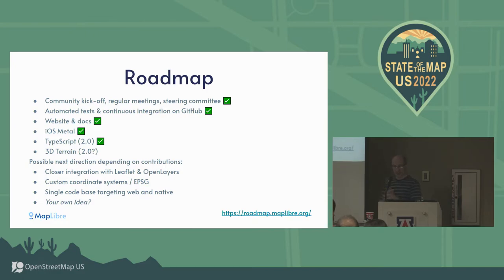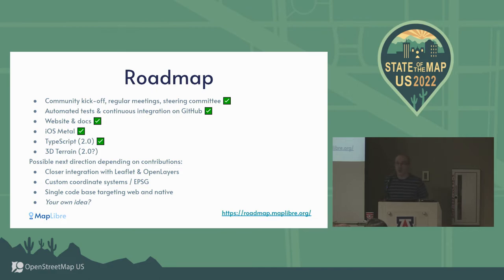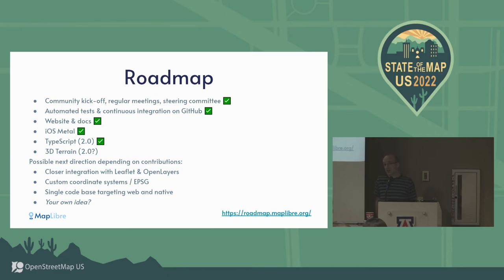Looking at our aspirations and approximate roadmap - some of these items have already been checked off. 3D map is next on the agenda. We want closer integration with Leaflet and OpenLayers. Possible targets include custom coordinate systems - Web Mercator is fun but does distort things. A single codebase is a stretch goal: we currently have one written in JavaScript/TypeScript and another in C++. Maintaining two codebases that do the same thing isn't efficient, so maybe Rust compiled to WebAssembly and native libraries is one idea.